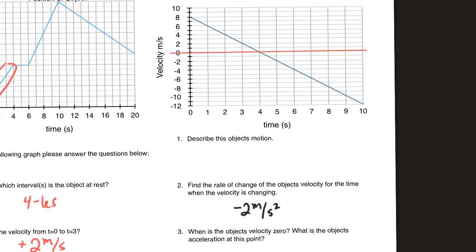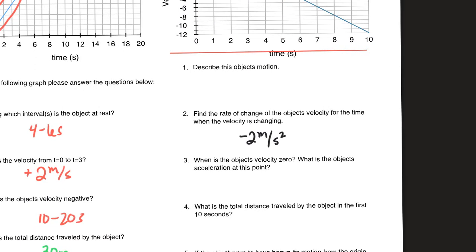The question 'when is the object's velocity zero, and what is the object's acceleration at this point?' has two parts. The big takeaway from past students is they forget to answer both questions — you only get half credit if you only answer one. You have to indicate the acceleration is still negative two meters per second squared and that the object stopped at the four-second mark.